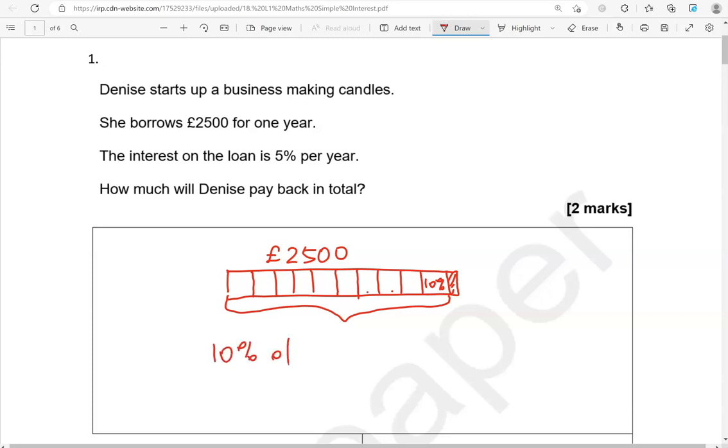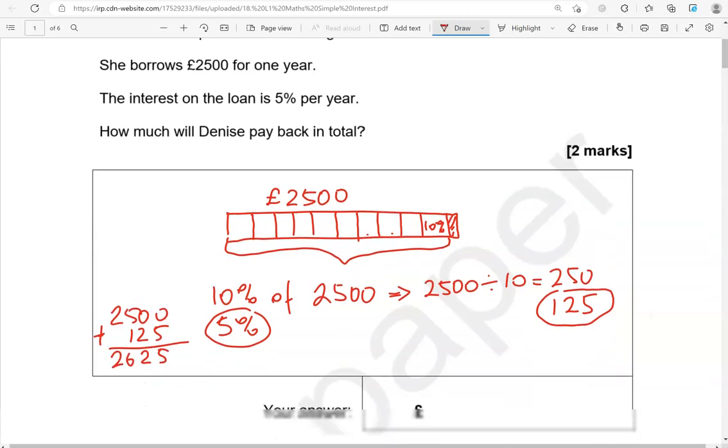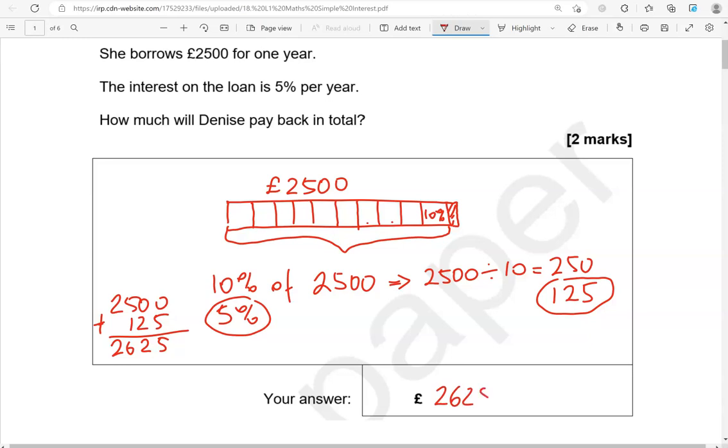So 10% of 2500, that is worked out by going 2500 divided by 10, which gives us 250. 5% is half of that, so 125. Now that we've got the 5% amount, we can just add it on top of 2500 to work out the amount that Denise will pay back in total. So that is 2,625 pounds.